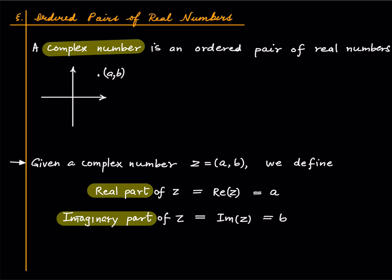Given a complex number a comma b, we define the real part of that as a, the x-coordinate, and the imaginary part of that as b, the y-coordinate.